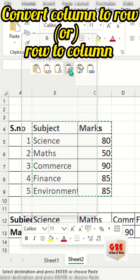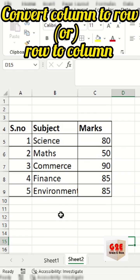This is how you can convert both rows to columns and columns to rows. I think this will be very helpful for you. If it is helpful, please subscribe to this channel and keep watching. Thank you, friends.